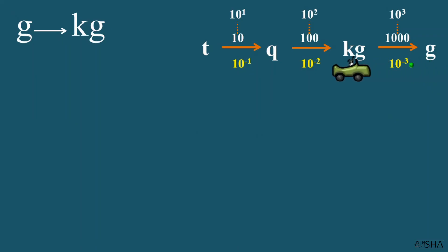Convert 4500 grams into kilograms. You need to multiply 4500 by 10 to the negative third power and this equals to 4.5 kilograms.